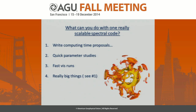So what do you do if you have a code that works really well? First you start writing computing time proposals. But in the meantime, you can do very quick parameter studies — you can take small problems like 128 cubed and run them very rapidly, doing many in a short time. You can also do quick vis runs, and then you can do really big things — but before you do those, you have to go back to number one.